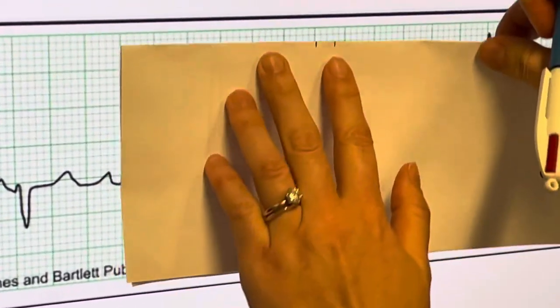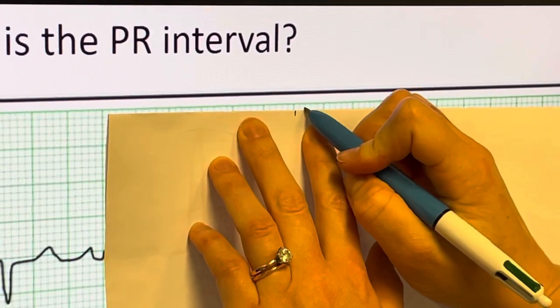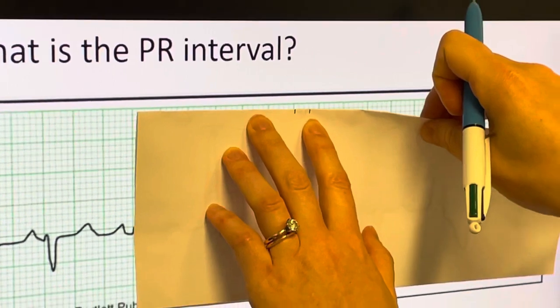I'm going to take my lines and move them up to a solid part of the grid. I can see that I have one, two, three boxes. And for my PR interval, that's 0.012 seconds.